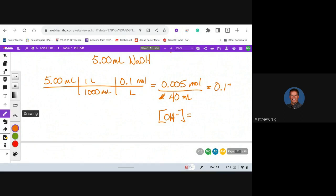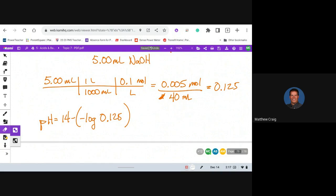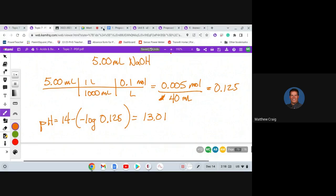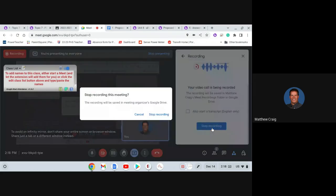So 5 times 0.1 divided by 0.04, I got 0.0125. So 0.0125, that's hydroxide. So pH is equal to 14 minus negative log of the OH. So 14 minus 13.1 equals about 13. Nice.